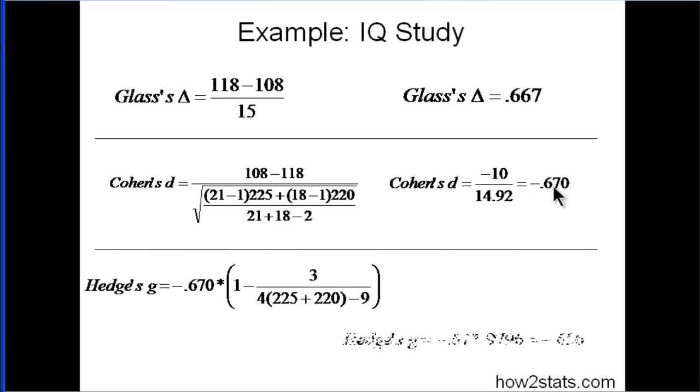And then Hedge's G when you solve for that you end up with a negative 0.656. So it's actually smaller than Cohen's D and the sample size here is about 21 plus 18, so 39 in total, and the bias comes out to be about 2%. That's about a 2% difference between negative 0.67 and negative 0.656. So again, why aren't we using Hedge's G?